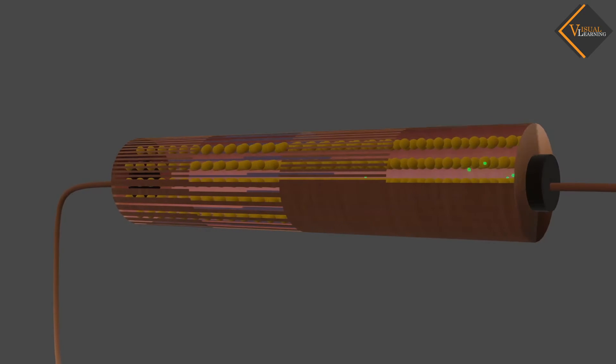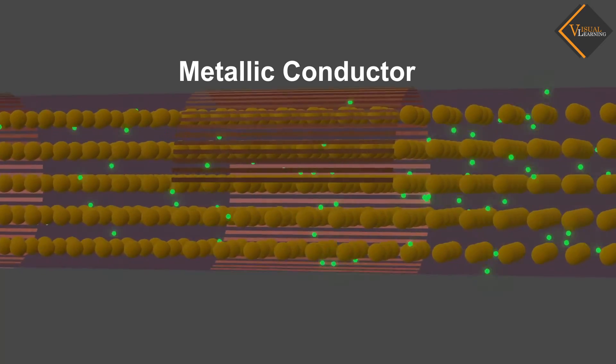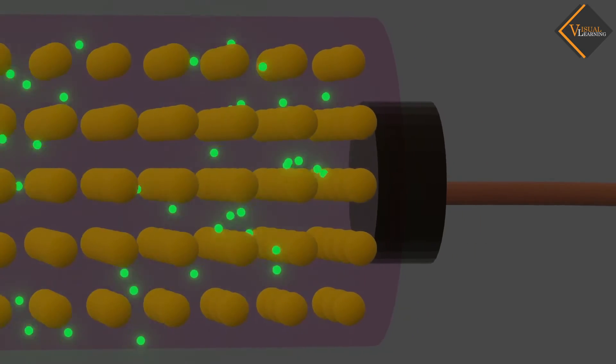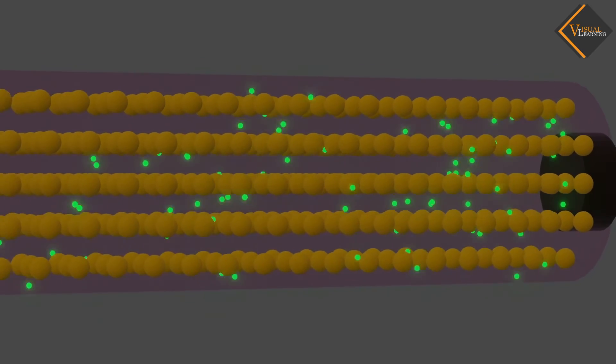Metals are made up of a large number of atoms bound together by metallic bonds. The electrons in the outermost shells of these atoms are free to move and conduct electricity.